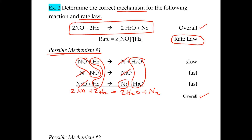Next, we're going to look at the slow step. The slow step is the rate-determining step. From that step you can write the rate law. So the rate is going to equal K, and then each reactant is raised to its coefficient as the exponent. Since this is a 1 and this is a 1, the exponent for each one will be 1.